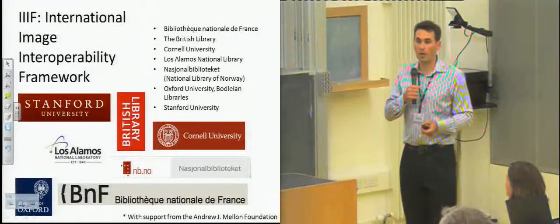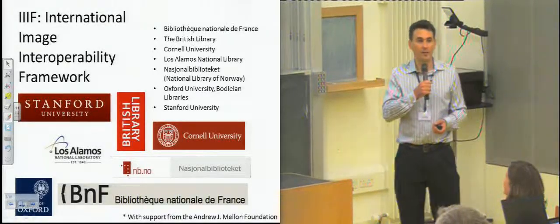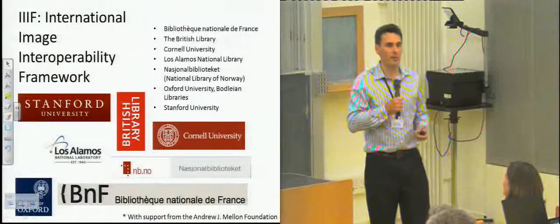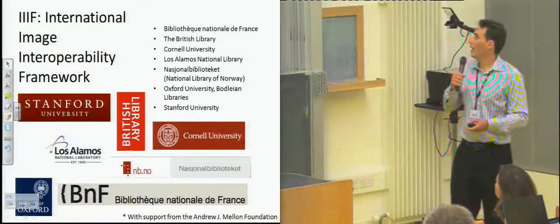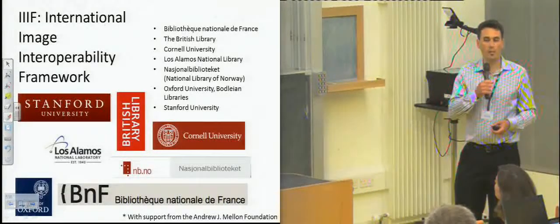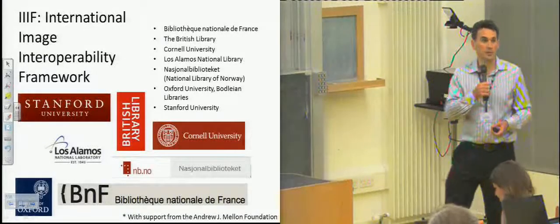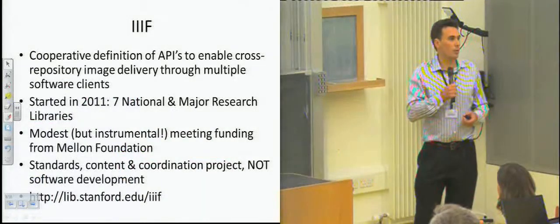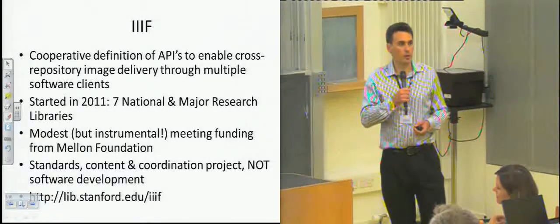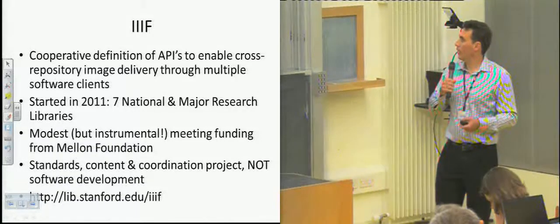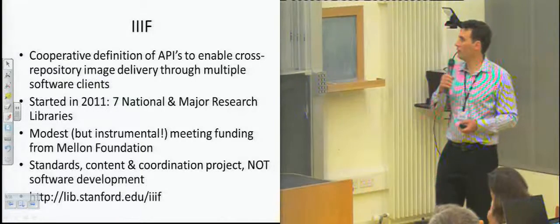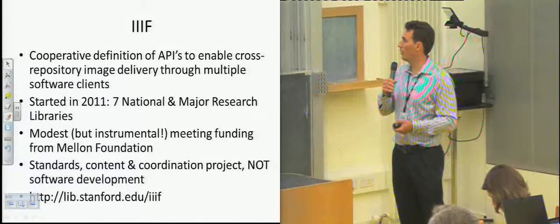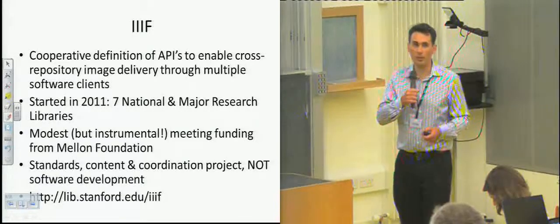The last item is IIIF, or as we call it, triple-I-F — the International Image Interoperability Framework. If you stay until noon, you'll get 30 minutes on this. This is an initiative of a number of major research libraries and national libraries — six of the world's greatest libraries and Stanford — working together to cooperatively define standard image access APIs to foster the development of open source or commercial image delivery applications. It's had modest but instrumental funding from the Mellon Foundation to get it off the ground, and it is different from the other two in that it is not a technology development project — it's really a standards and content exposure operation.